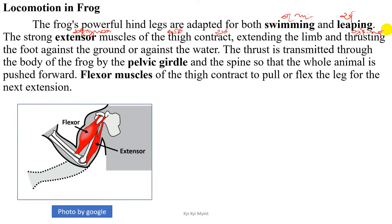The thrust is transmitted through the body of the frog by the pelvic girdle and the spine.